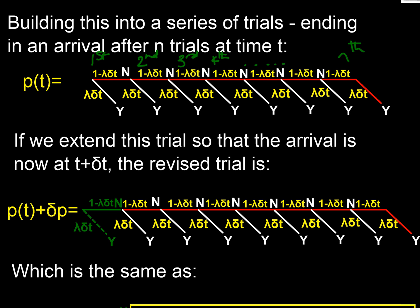We can work out the probability of the bus arriving at the nth trial, because it's the product of all the 'not arrived' outcomes in the first through (n-1) trials, followed by an arrival at the nth. This gives us the probability of it arriving after time t. Now we want to extend this idea: what if the bus arrives not after time t but after time t plus delta t? We add one more little trial to the sequence.